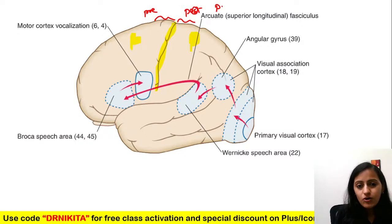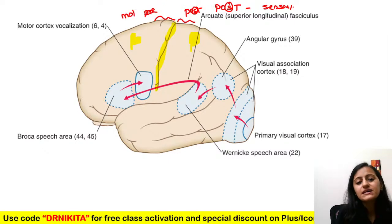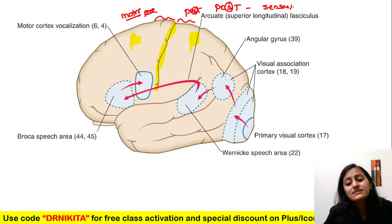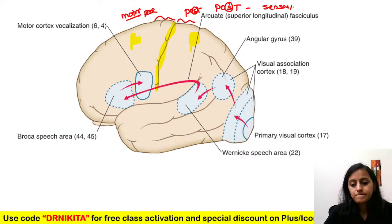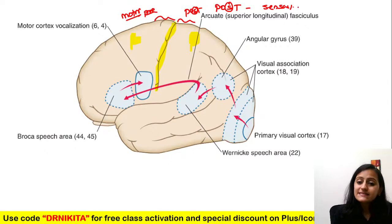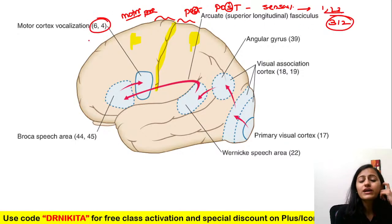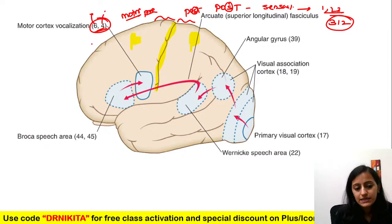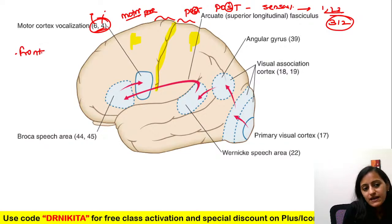Remember: post-central — P-O-S-T — S is for sensory area. Motor is pre-central. The Brodmann areas: before doing a motor activity, sensation comes first, so areas 3, 1, 2 are sensory — the primary sensory cortex is the post-central gyrus. After that, area 4 is primary motor and area 6 is the pre-motor area.